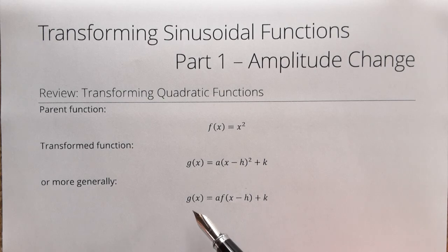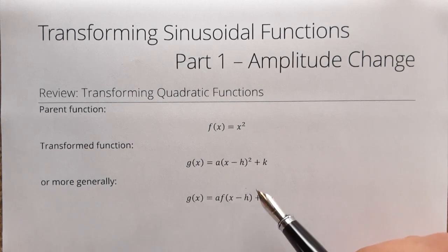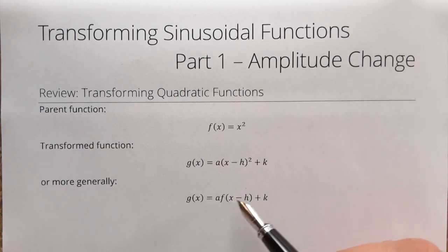A more general way to write this for any function would be g of x equals a times f of x minus h plus k. You see the squared is gone there because that's wrapped up in the definition of f.